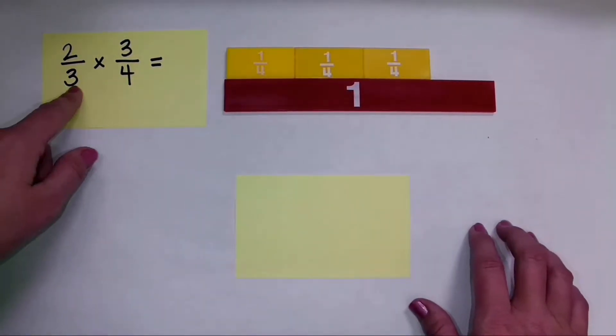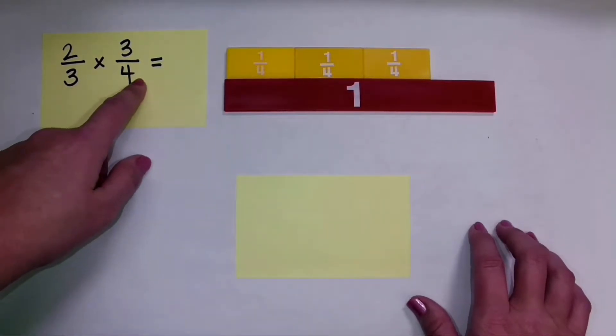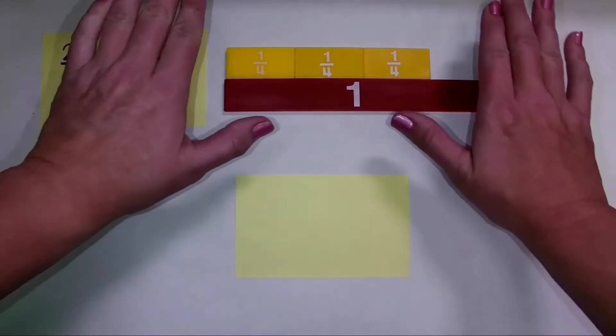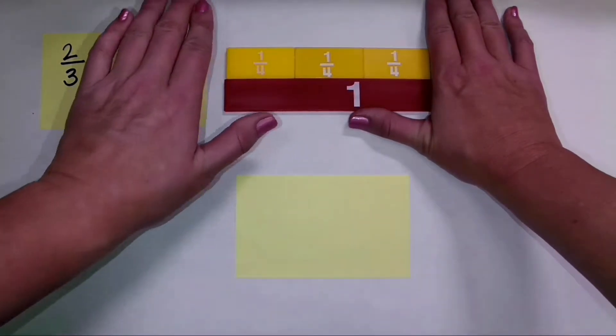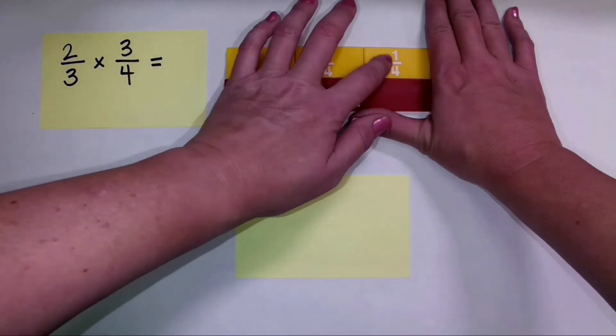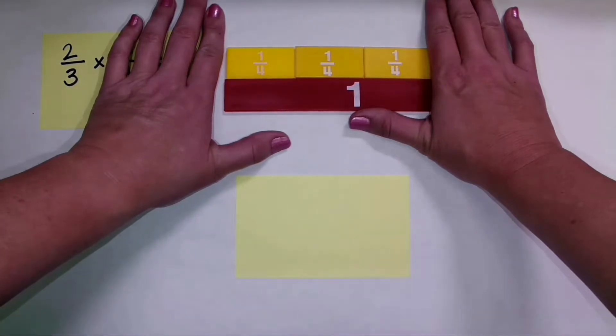Now I want to find 2 thirds of 3 fourths. So what I always like to do is kind of use my hands and focus in on those 3 one fourth pieces. And I want to find 2 of the 3 one fourth pieces.